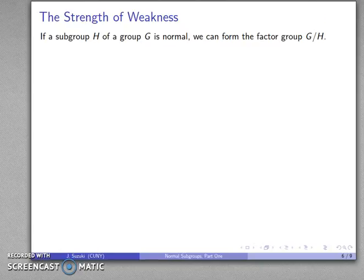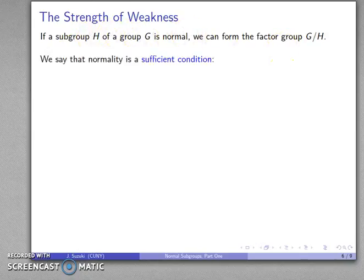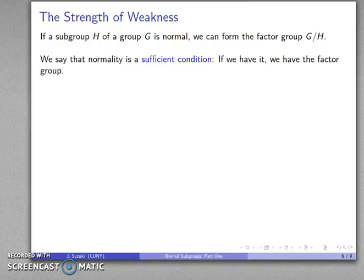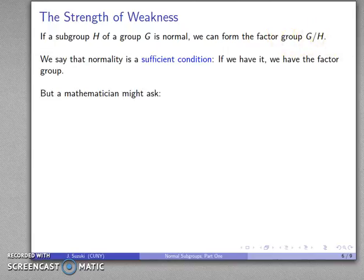We are in an interesting position now. If a subgroup H of G is normal, we can form the factor group G over H. We say that normality is a sufficient condition - if we have it, we can guarantee the existence of the factor group. But a mathematician might ask: can we make do with less?